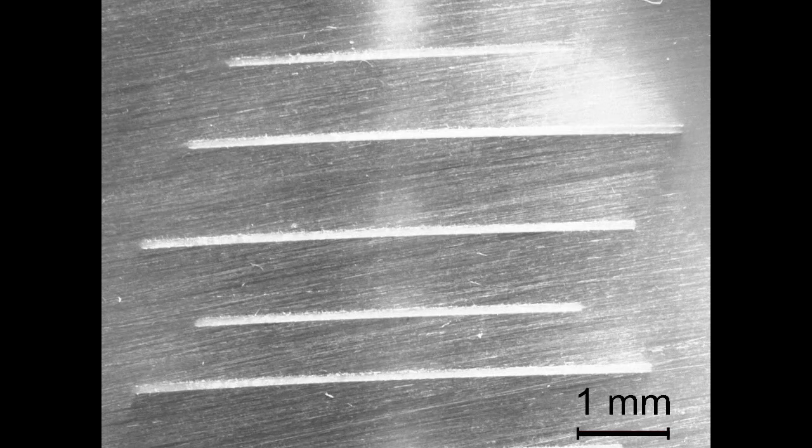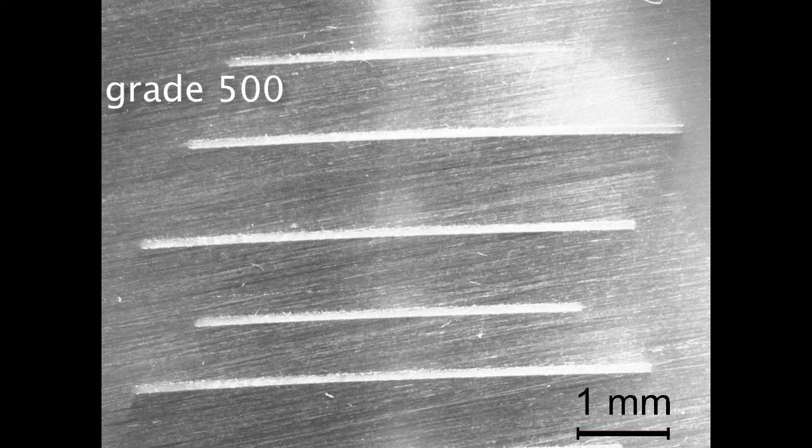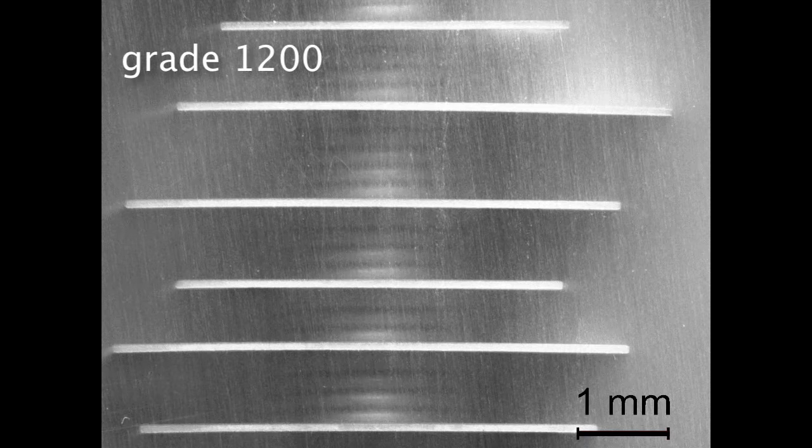So here you see a low magnification image of the sample after it's been grinded with the 500 grade paper. You see also that the grinding marks go from left to right horizontally. The next image shows how the lines go when we reach grade 1200. Here the lines are vertical.